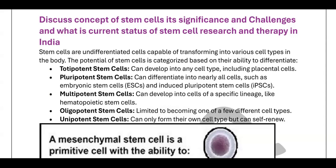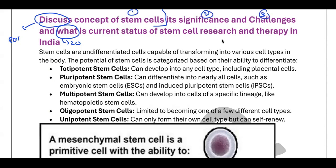Now let's start our discussion of MAD series Day 2. The question is: discuss the concept of stem cells and its significance and challenges. First, I have to identify the question tags — 'discuss' and 'what.' When I compare the two, 'discuss' is a broader tag, so I will give it 80% weightage and 'what' gets 20%. Also, identify all steps in the question: concept, significance, and challenges. Students often forget one part in the exam and lose marks.